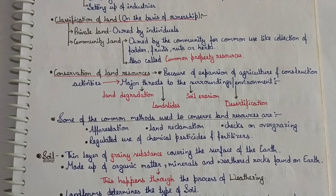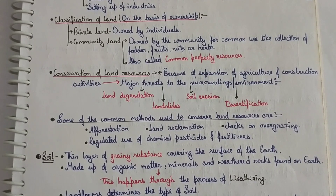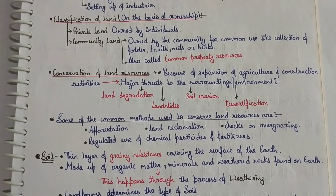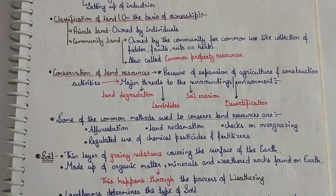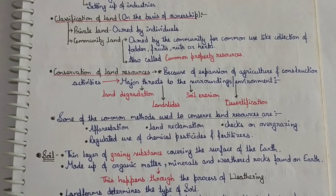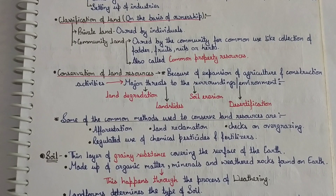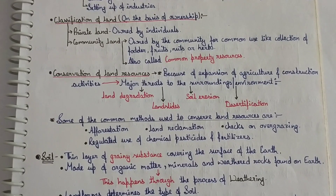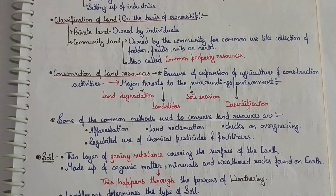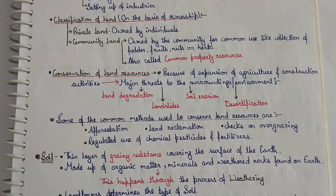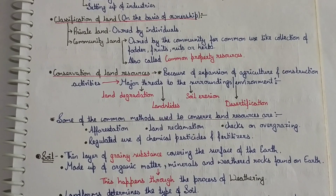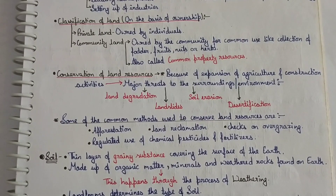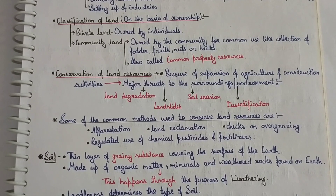The next point is soil. Soil is a thin layer of grainy substances covering the surface of the earth. It is made up of organic matter, minerals, and weathered rock found on the earth. Soil forms through the process of weathering — weathering is the breakdown of rocks at the earth's surface by the action of rainfall, extreme temperature, and biological activities.